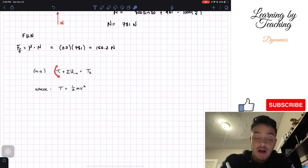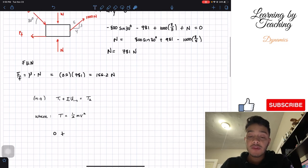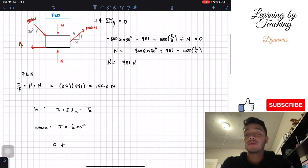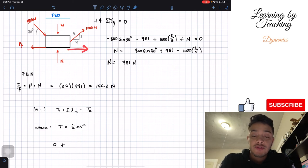So let's just start with that. First, our initial velocity is equal to 0. Therefore, this T1 is going to be equal to 0. So we're going to have 0. Plus, now we need to do the sum of all my work.